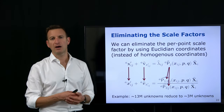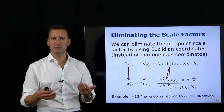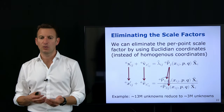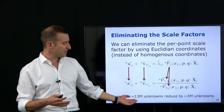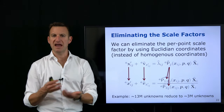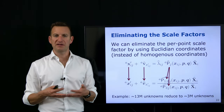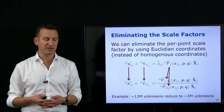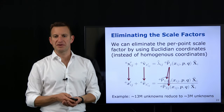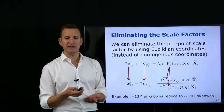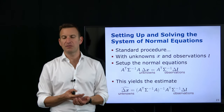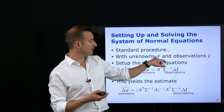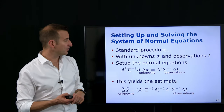We set up the standard normal equation system: A^T Σ^{-1} A Δx = A^T Σ^{-1} Δl, where A is the Jacobian, the information matrix weights the equations, and Δx is the update to my parameters. By solving this system I get an update to my unknown parameters, and in this way I can iteratively estimate my unknowns and solve my least squares problem.